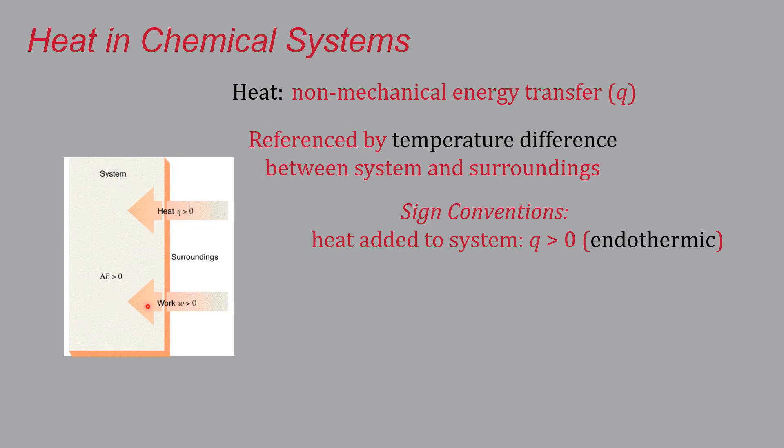So sign convention. If heat is added to the system, its q goes up, it is greater than zero, and the word we attach to that is endothermic. Now if heat is added to the system, that means it has to come in from the surroundings. The surroundings actually get colder, which is where the endothermic comes in. Now if heat is released by the system, then q is actually a negative quantity. That heat goes out to the surroundings, the surroundings get warmer, and we call this process exothermic.